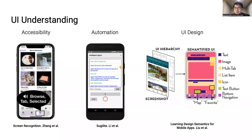Models that understand user interfaces can power a wide variety of systems used for accessibility, task automation, and UI design. Often, they must interact with UIs in environments with incomplete or missing metadata, which necessitates that they reliably understand UIs visually.